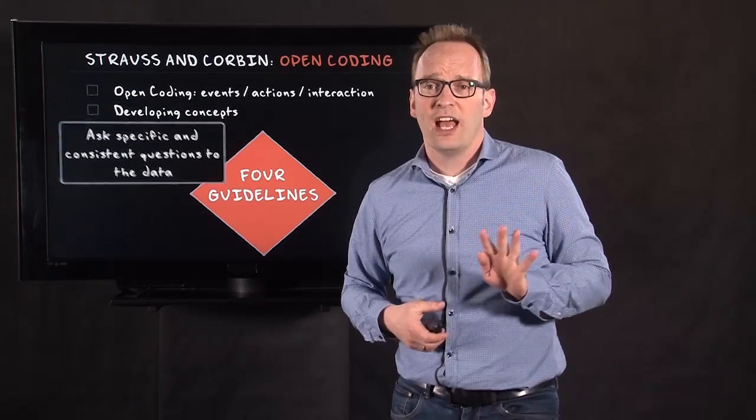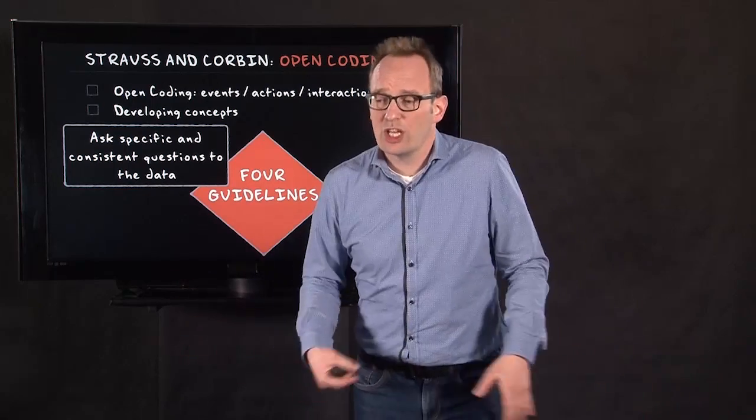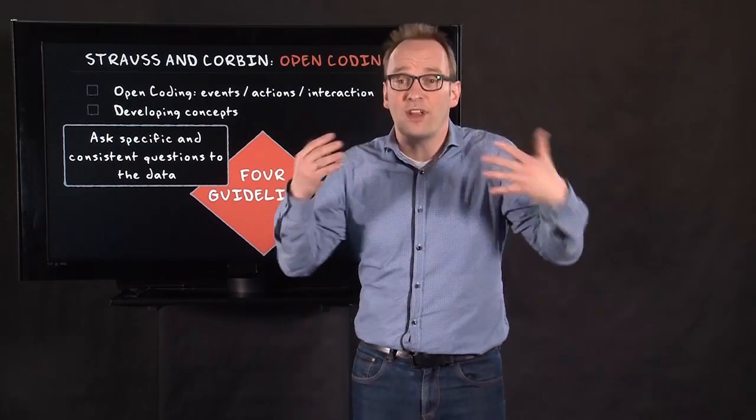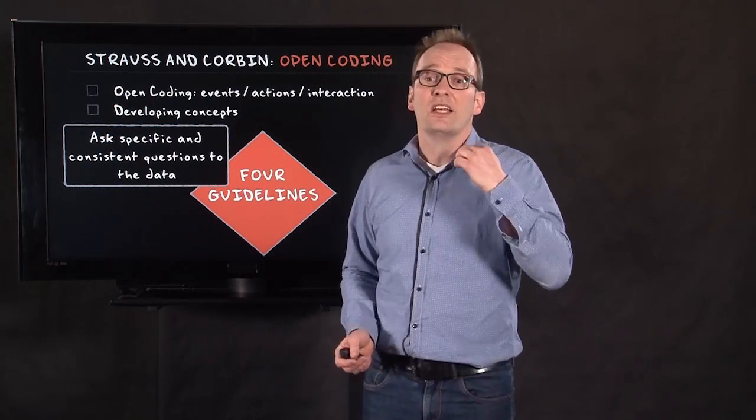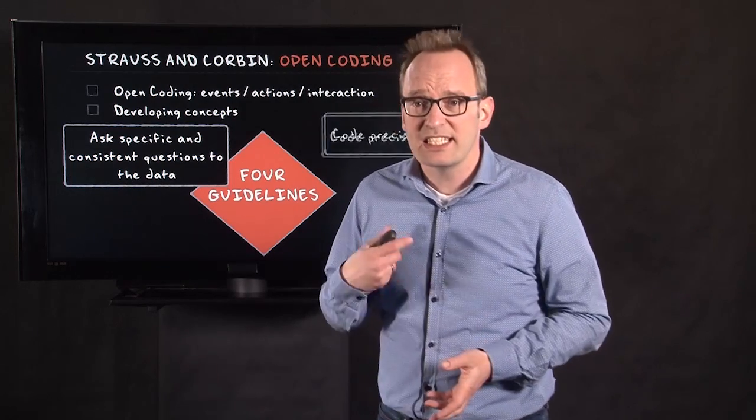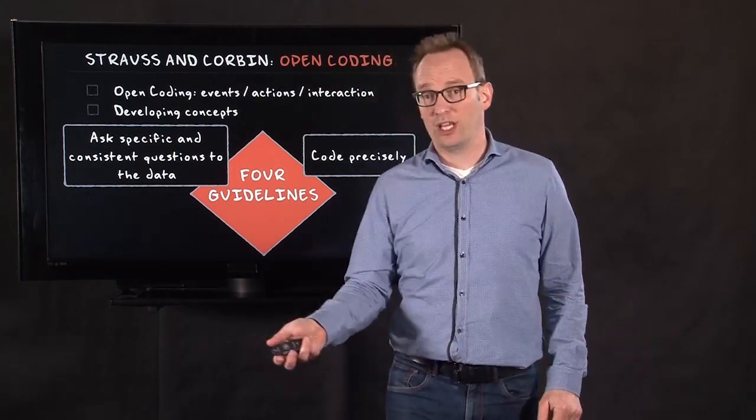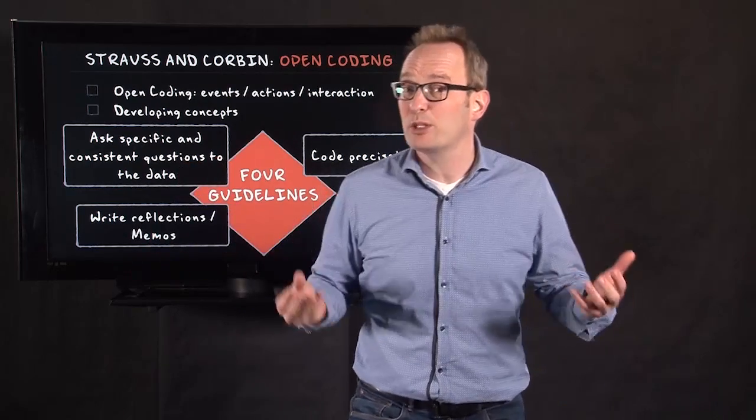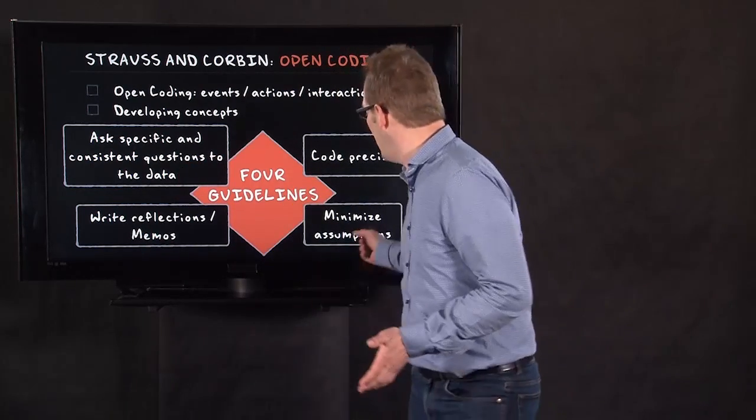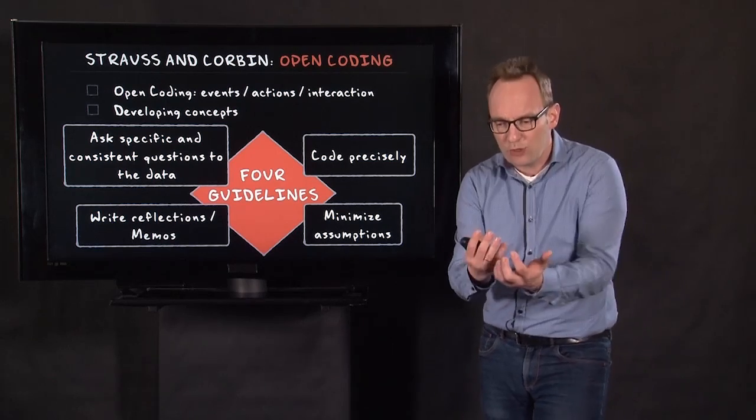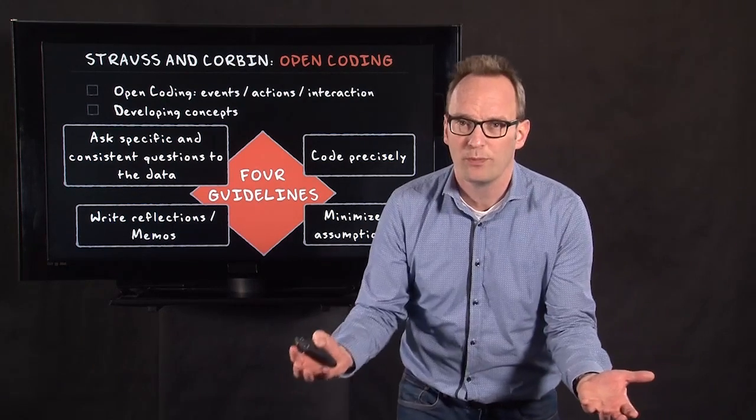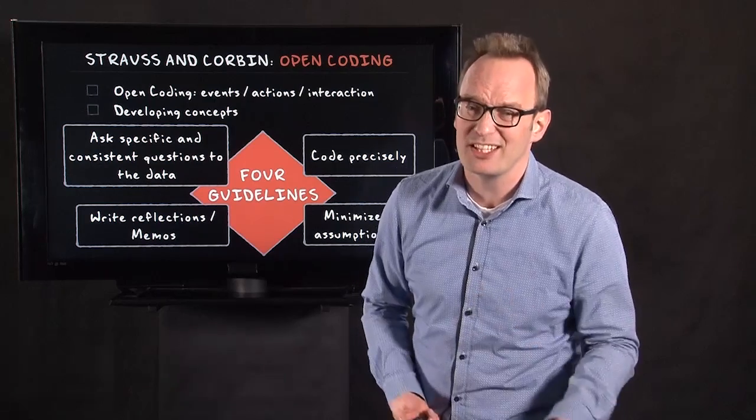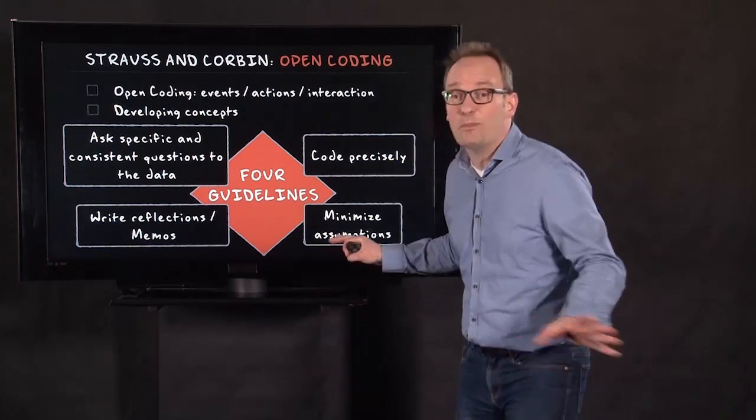And in order to do so, they suggest four guidelines. The first is, ask questions to your data. You can't just code. You have to ask specific questions and consistent questions to your data. The second guideline is, you have to be precise while coding. The third guideline is, you have to write. You have to think about what you're doing, about the process you're in. And the fourth is, you have to minimize your own assumptions. So you try to be as open as possible. Open-minded does not mean empty-headed, but you try to minimize your assumptions.